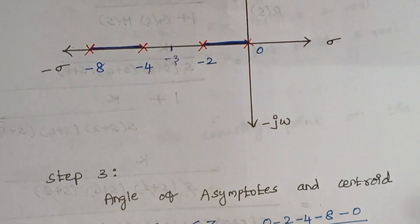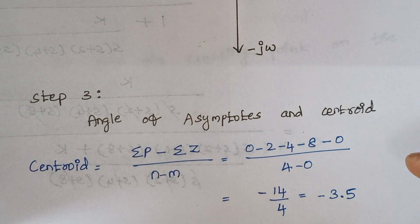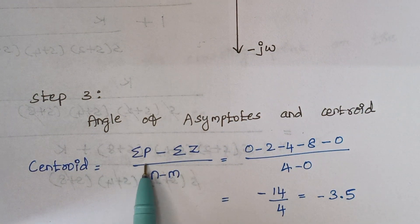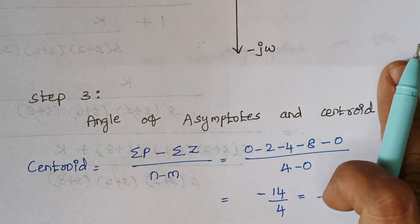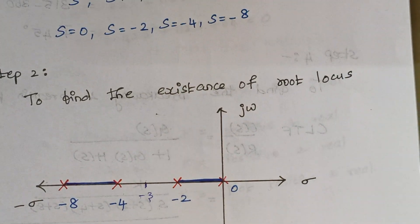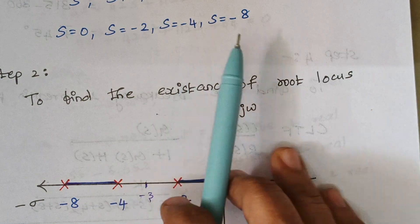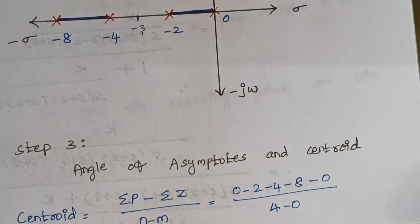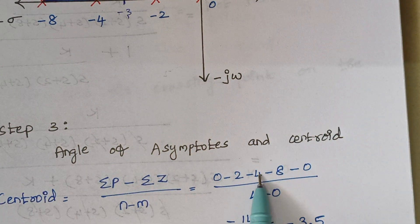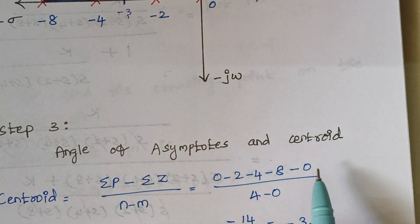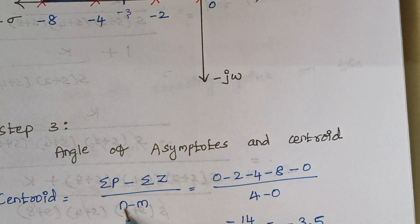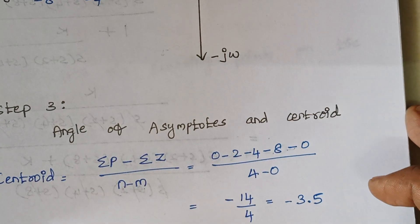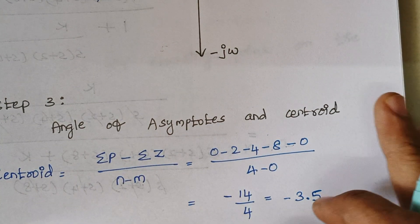Step 3 is finding the angle of asymptotes and centroid. The formula for centroid is: sum of poles minus sum of zeros, divided by n minus m. The pole values are 0, -2, -4, and -8. Summing these: 0 - 2 - 4 - 8 = -14, minus zero (no zeros). The number of poles n is 4 and number of zeros m is 0, so n - m = 4. Solving gives a centroid value of -3.5.